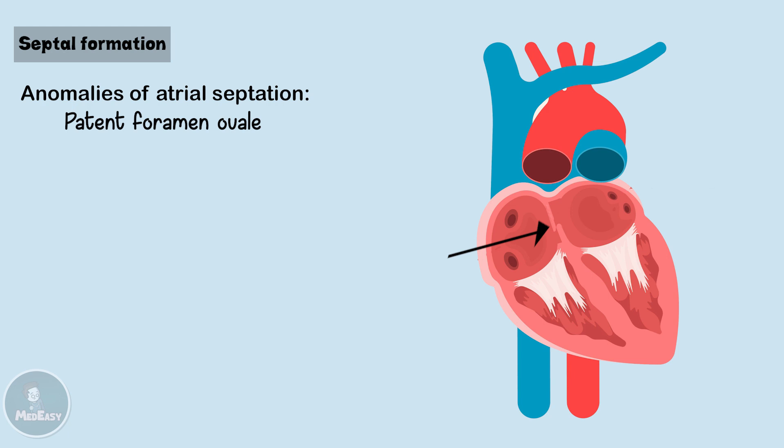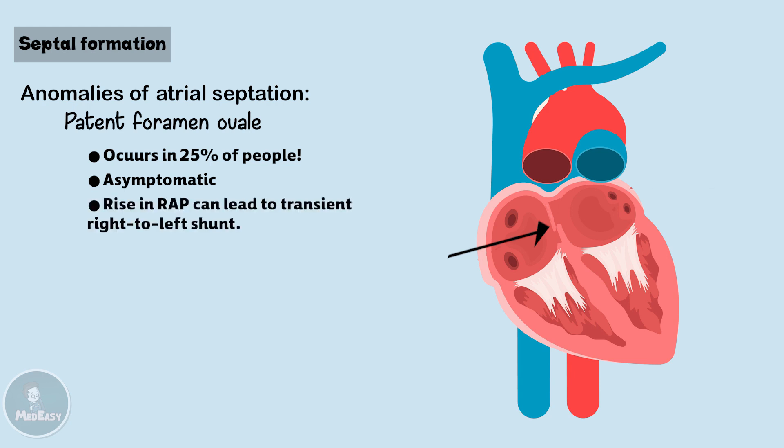This condition is in fact so common it occurs in about 25% of people, but most remain asymptomatic and don't know they have the condition. But because the two septa remain unsealed, any rise in right atrial pressure, as in the Valsalva maneuver during sneezing or straining during bowel movement, can lead to a transient right-to-left shunt and can also cause paradoxical embolism, meaning that venous emboli can enter the systemic arterial circulation via this open defect.